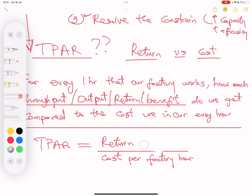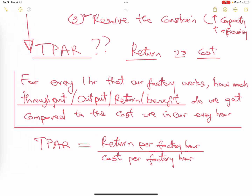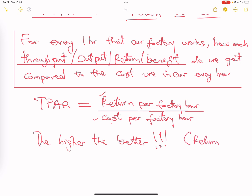Students often struggle with throughput accounting, but it's one of the simplest costing techniques. The formula is return per factory hour divided by cost per factory hour. Because we are asking how much return do I get in excess of cost — the higher the better. You always want your return to be greater than your cost, meaning the numerator should exceed the denominator.